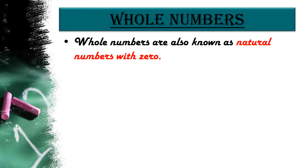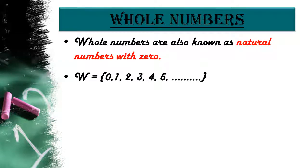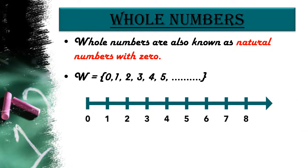The next type is whole numbers. Whole numbers are natural numbers with zero included. The set of whole numbers can be written as W = {0, 1, 2, 3, 4, ...}. On the number line, whole numbers start from 0 and include all natural numbers up to infinity.